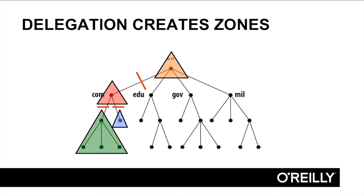Here's a diagram showing how delegation creates zones. The red line segments represent delegation. Up at the top, we have the root zone in orange, managed by ICANN. And below it in red, the com zone, managed by VeriSign.